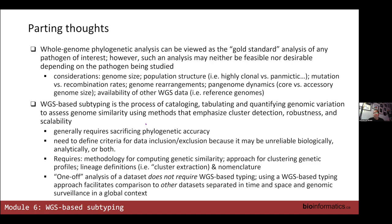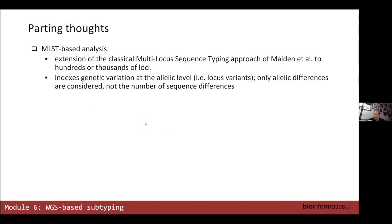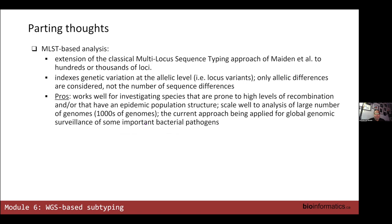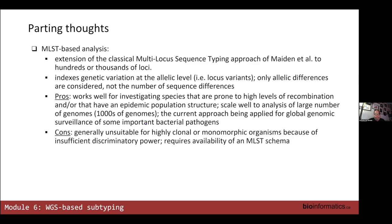In terms of MLST, I wasn't a big fan but I'm more of a recent convert. The pros are that it's good when you have a lot of recombination, and now that we have whole genome sequence data we can do the analysis with thousands of loci as opposed to seven. It is the approach currently being used for the analysis of global genomic surveillance data for a handful of really important pathogens. However, if you have a highly clonal organism, MLST is probably not going to help you because everybody is going to look the same. You also need a schema — in the lab we'll go through an ad hoc schema creation process, but normally you'd want to use something like ChewBBACA.